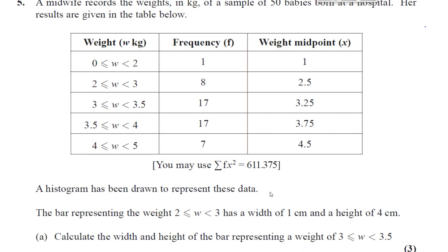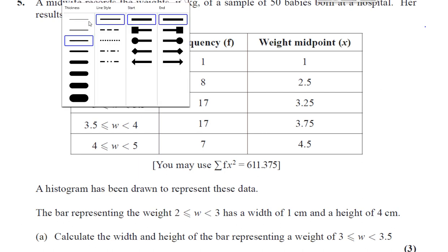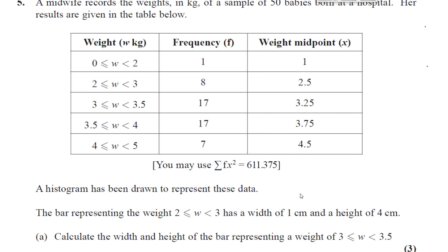Calculate the width and height of the bar representing a weight of 3 to 3.5. So first of all, the width of the bar, that's not much of a deal. But the height of the bar in a histogram is not given by the frequency. The height of the bar is determined by what's called the frequency density. Because we want the area to be representative of the frequency rather than the height of the bar, seeing as the widths are varying.